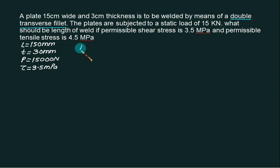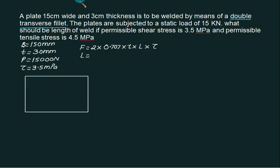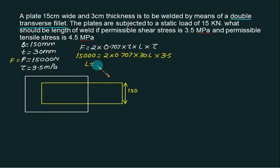Can we calculate force? F equals 2 times area, which is 0.707 into T into tau. Substitute all the values to calculate T. The length comes out to be 101mm. We need to adjust half on each side.